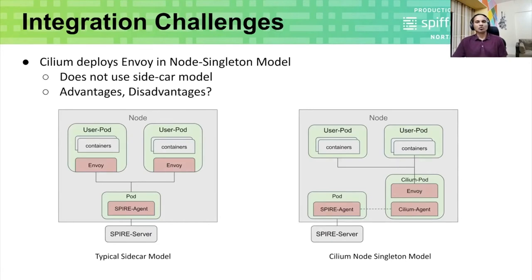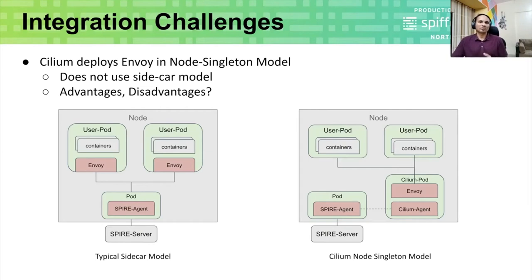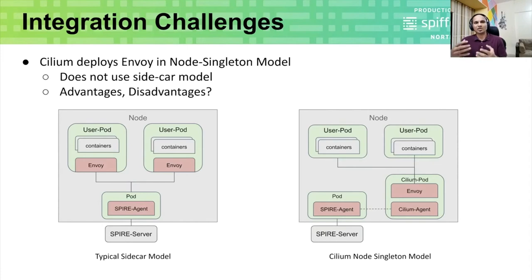Now I'll jump into the integration challenges. SPIFFE is already integrated with most of the service meshes out there, for example Istio. While all these service meshes have one thing in common — most of them operate in a sidecar model — the Envoy proxy is located as part of the user pod, so Envoy can attest on behalf of the workloads because it is part of the same cgroups. In case of Cilium, Cilium deploys Envoy in a very different model: a node singleton model wherein there is just a single Envoy proxy on the whole node. All user pods redirect their traffic through eBPF logic. This is a significant design change that had major implications on SPIFFE integration.